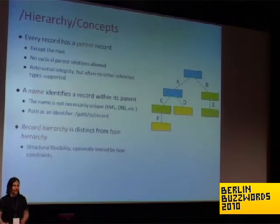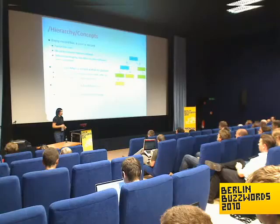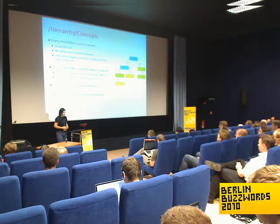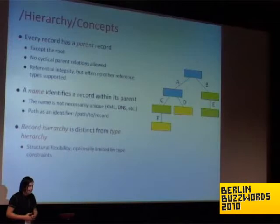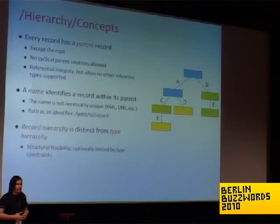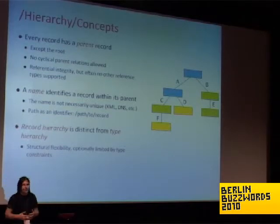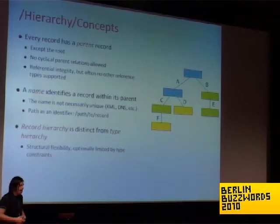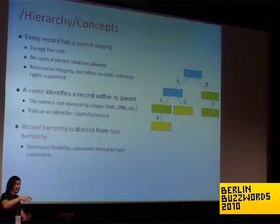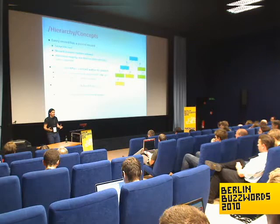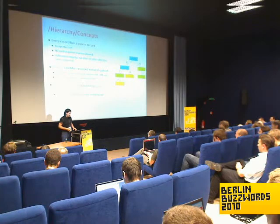Another thing fairly typical of hierarchical models is that you have a name for each record. The name identifies the record within its parent. There are cases where the record isn't unique — in XML you can have multiple elements with the same name within a single parent element, and in DNS you can have multiple records for the same entry. But regardless, the path of a record is a very good way of identifying it — either identifying a single record or a set of records. Typically, the path within a hierarchical database is the fastest way of accessing a record — blazingly fast for many implementations.